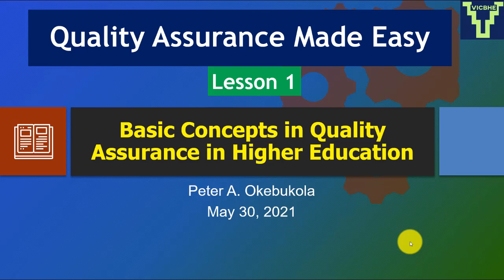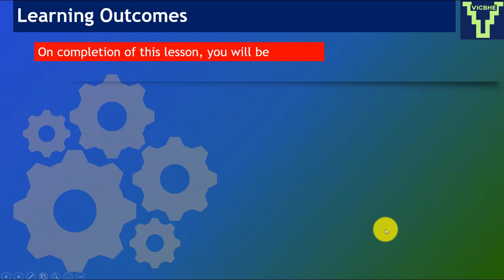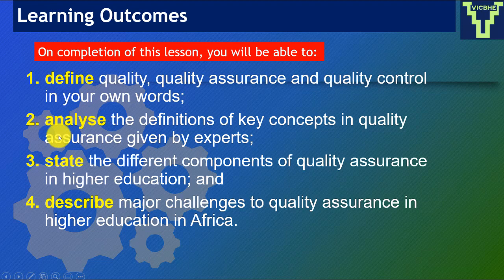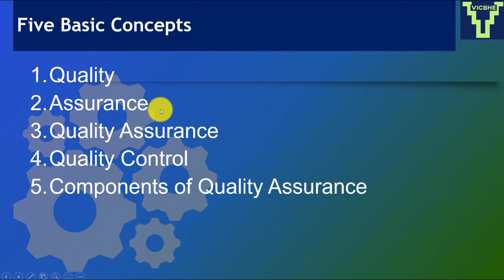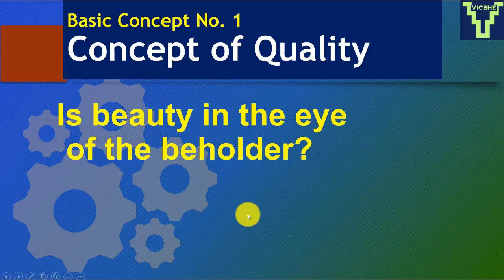We begin with basic concepts today. The learning outcomes: when we complete this lesson you should be able to define quality, analyze definitions, state the different components of quality assurance in higher education, and describe major challenges to quality assurance in higher education in Africa. We have five basic concepts to learn in this lesson: quality, assurance, quality assurance, quality control, and components of quality assurance.